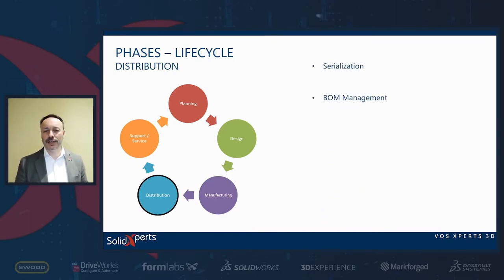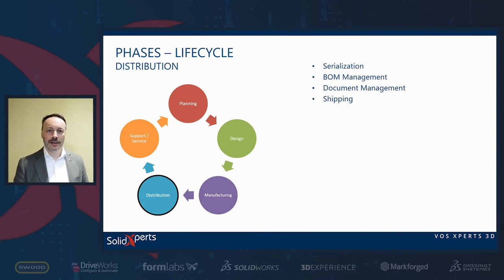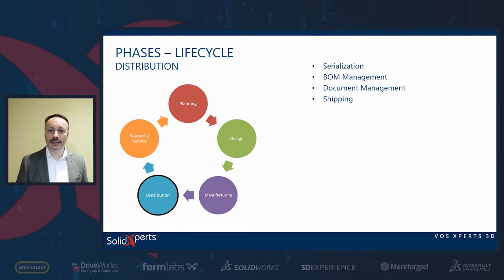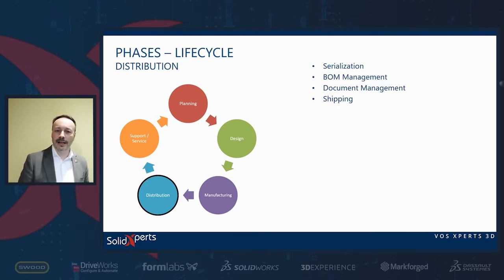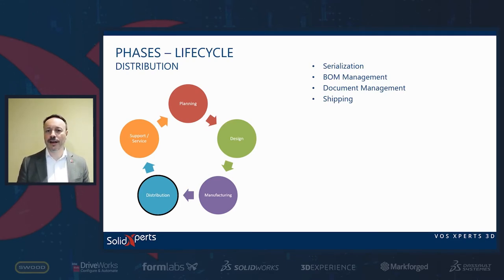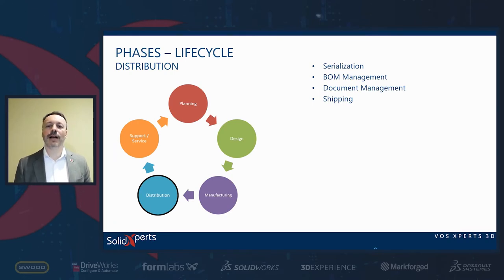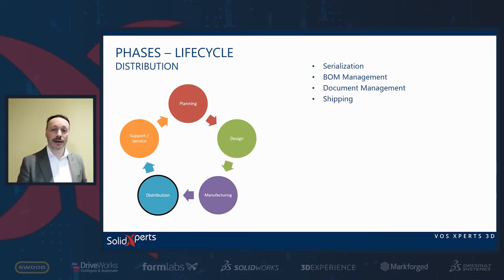Then we go on to the distribution phase. There's serialization — if you're selling a certain volume of machines, they need a serial number in order to later support the support and service phase. You need some tools to do that, some BOM management and document management as well, and shipping needs to be obviously managed too.